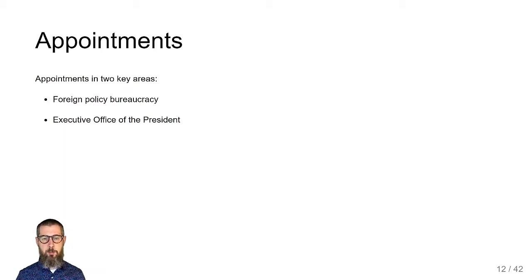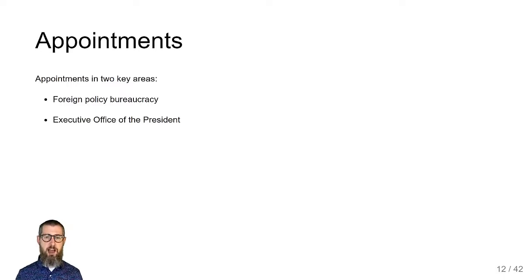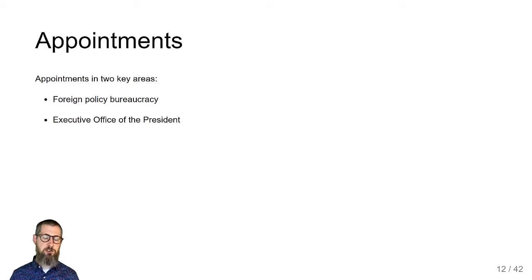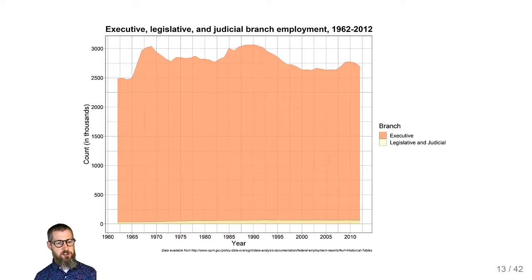The Executive Office of the President was created in 1939 during the Roosevelt administration, in response to growing demands from managing New Deal programs and the U.S.'s emerging response to war in Europe. Prior to this, the president didn't have much staff to manage day-to-day affairs. Bureaucratic agencies like the State Department existed before World War Two but were very small. The executive branch absolutely exploded in size during the 1930s and 1940s.